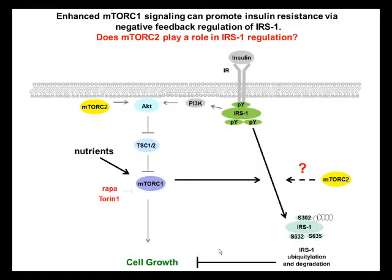mTOR exists as two protein complexes in the cell, termed mTORC1 and mTORC2. The purple protein in this figure depicts mTORC1. mTORC1 consists of the proteins mTOR, RAPTOR, and LST8. It is active in the presence of nutrients. Insulin signals augment mTORC1 signaling via activation of the protein kinase AKT, which relieves the inhibitory action of the tumor suppressor protein complex TSC, or tuberous sclerosis proteins.